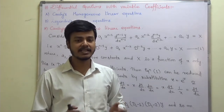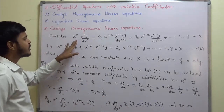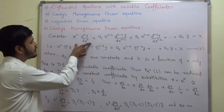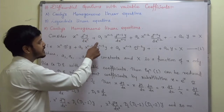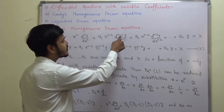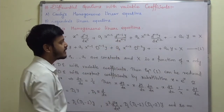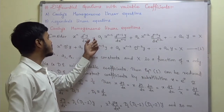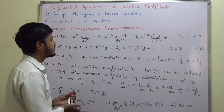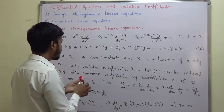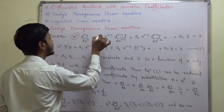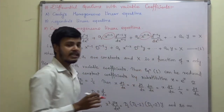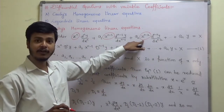Without wasting much time, let us start. We will be having some equation of the type: x to the power n, d^n y/dx^n, plus a1 x to the power n-1, d^(n-1)y/dx^(n-1), and likewise. This is the equation. How to identify this as Cauchy's homogeneous linear equation? Instead of constants, we will be having a variable.